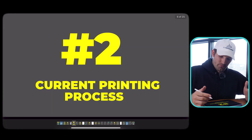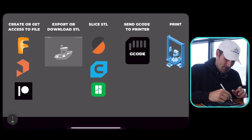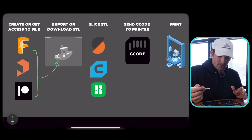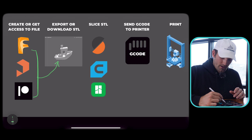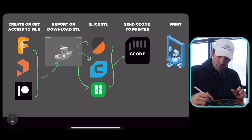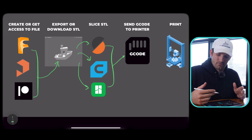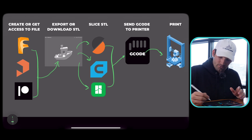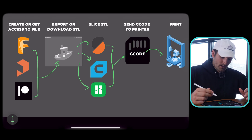Next, the current printing process: you get a file from one of those three places and you get an STL file — the Benchy being the classic example. Then you send it to a slicer: PrusaSlicer, Cura, or Bambu Studio, which is basically a port of PrusaSlicer. The slicer generates G-code, which is traditionally put on an SD card or thumb drive, or sent via Wi-Fi — which is more common with Bambu Lab printers.